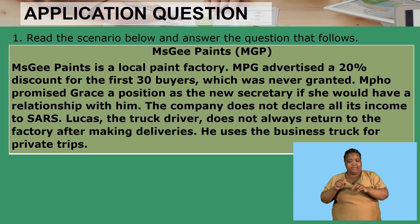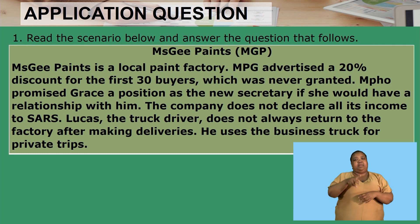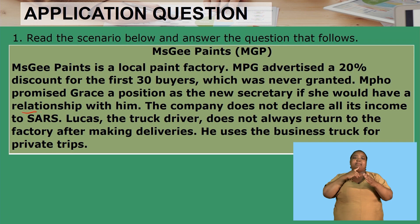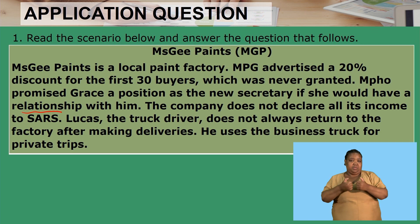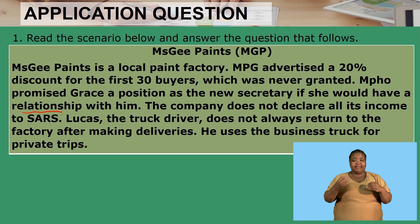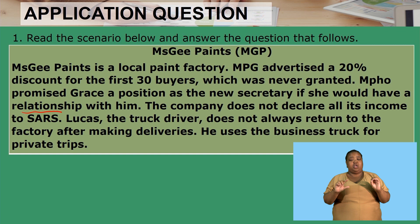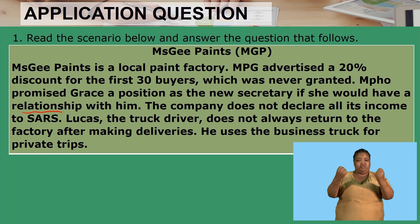MPaw promised Grace a position as the new secretary if she would have a relationship with him. The company does not declare all its income to SARS. Lucas the truck driver does not always return to the factory after making deliveries — he uses the business truck for private trips. A lot is going wrong in this business.